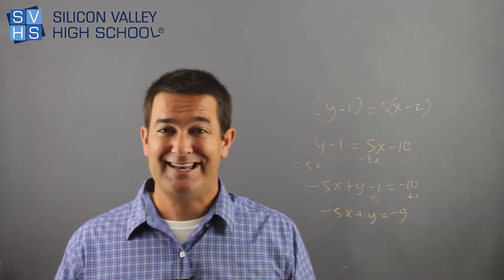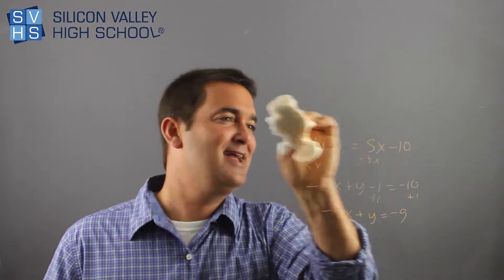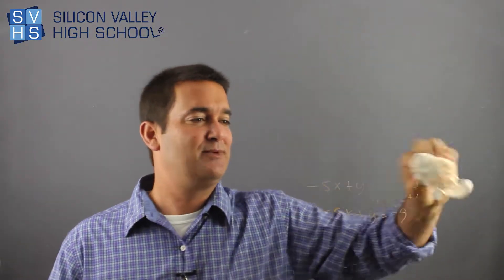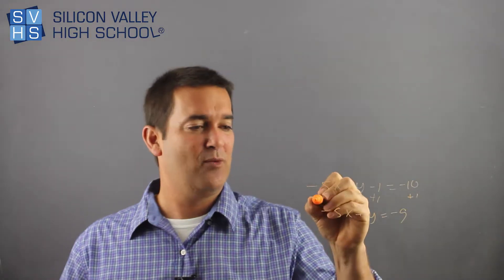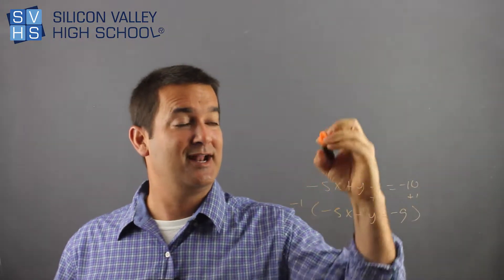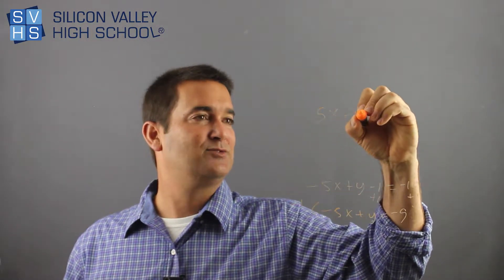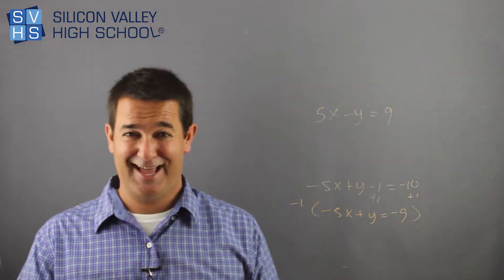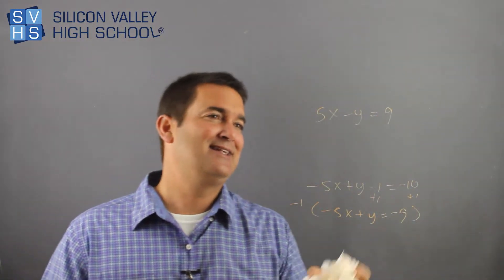Totally not done, because you cannot have a negative for standard form. So I'm going to bring this back up, multiply the whole problem by negative one, so you're going to have five x minus y equals positive nine. You get that? You totally get that? So that's standard form.